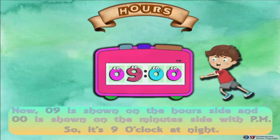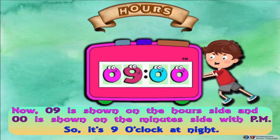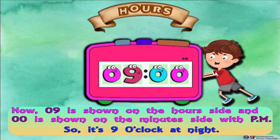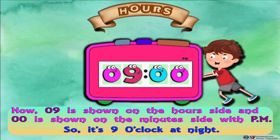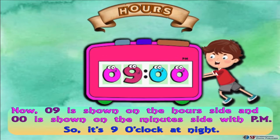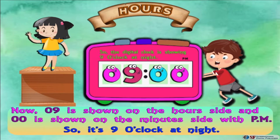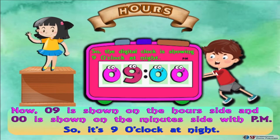Now 09 is shown on the hours side and 00 is shown on the minutes side with P.M., so it's nine o'clock at night. The digital clock is showing nine o'clock at night.